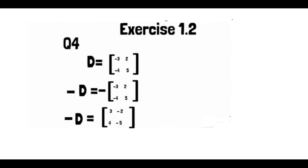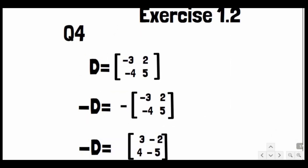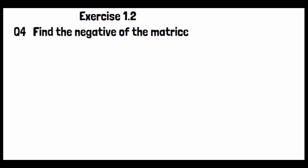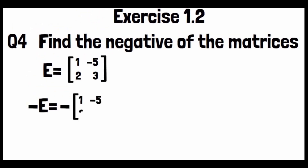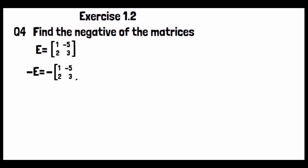Exercise 1.2, Question 4, part E: Matrix E is [1, -5; 2, 3]. To find its negative, we write minus E and apply minus inside. The entries become: -1, 5, -2, -3. So minus E equals [-1, 5; -2, -3].